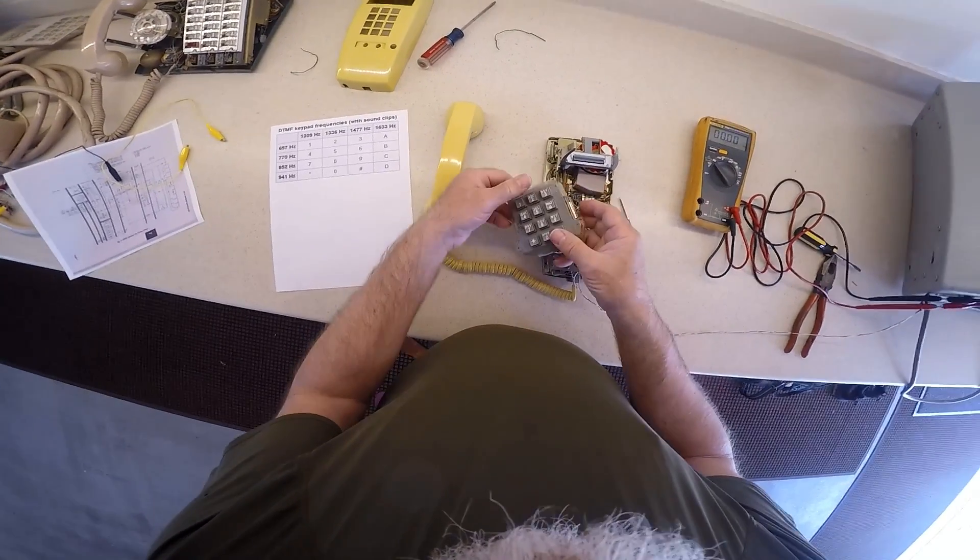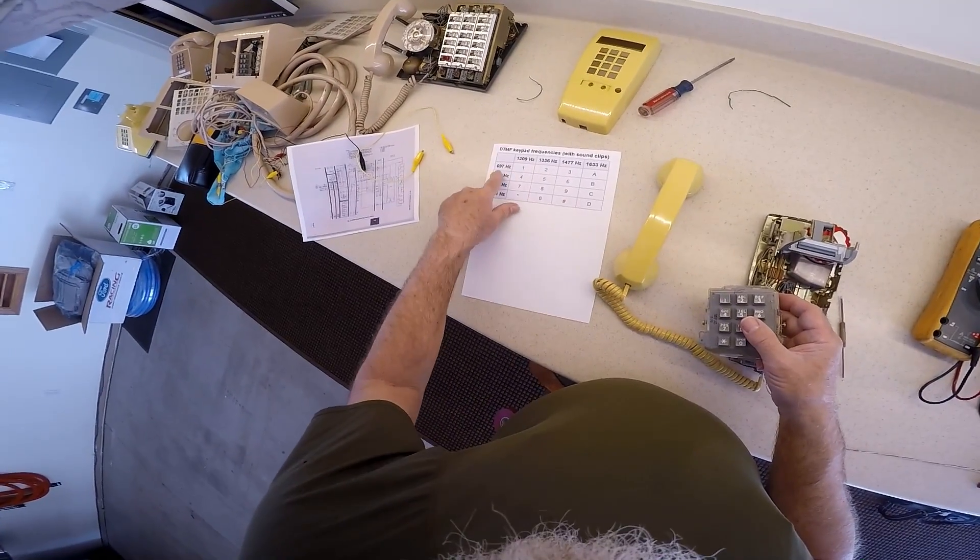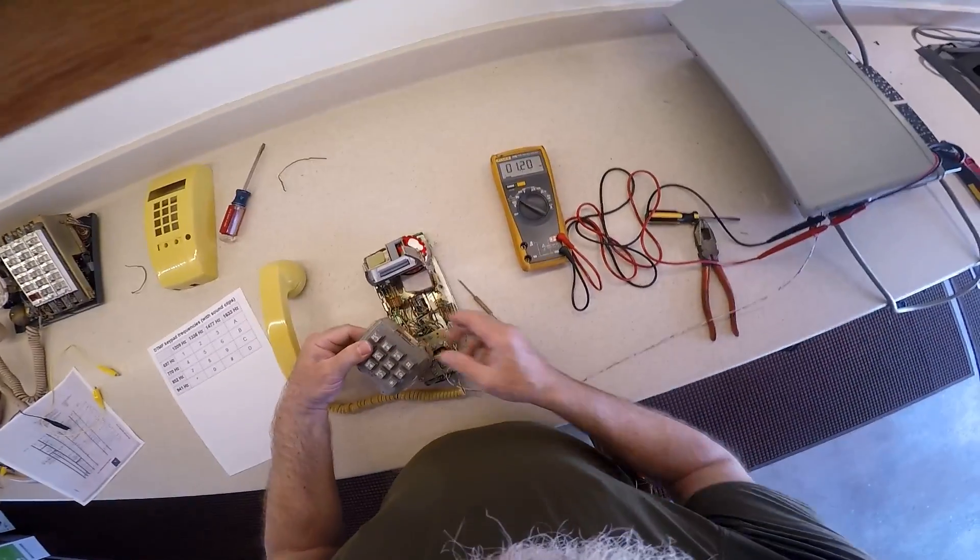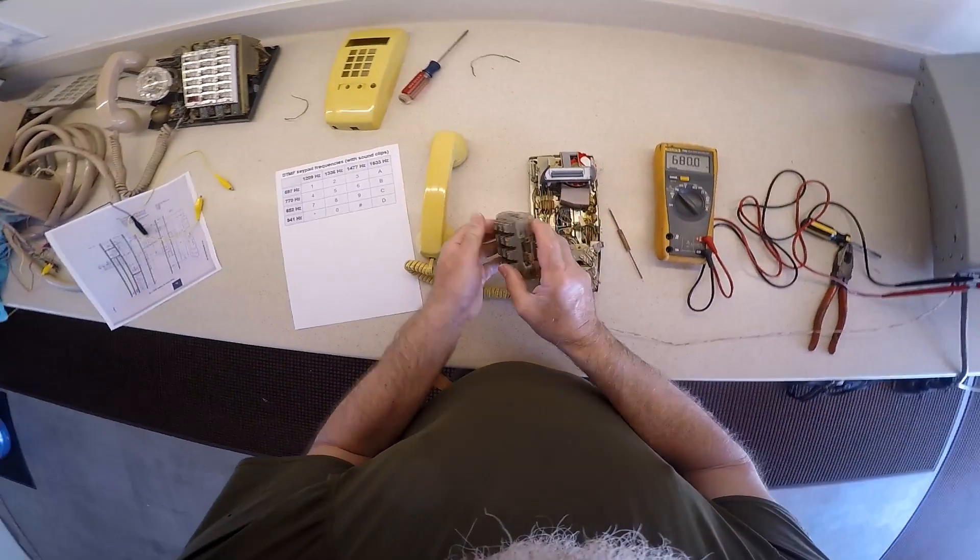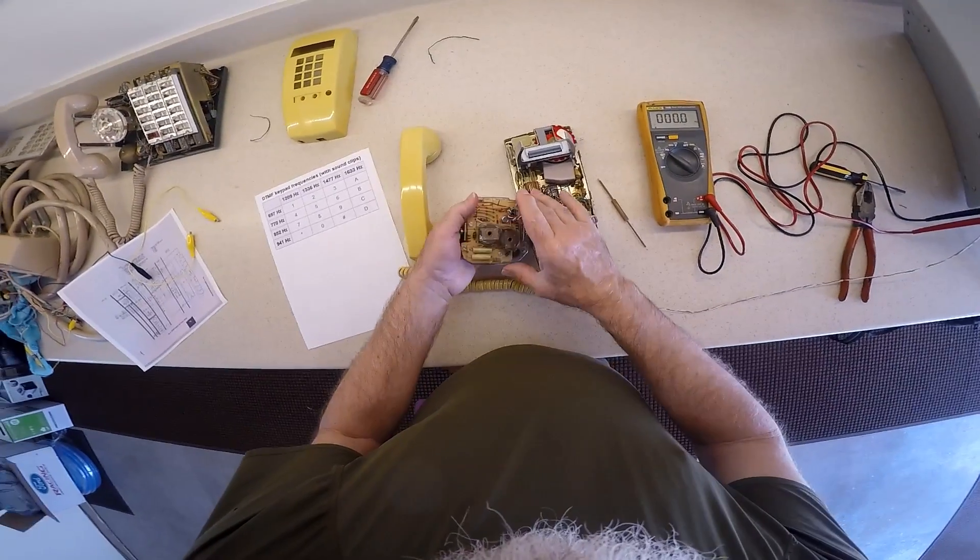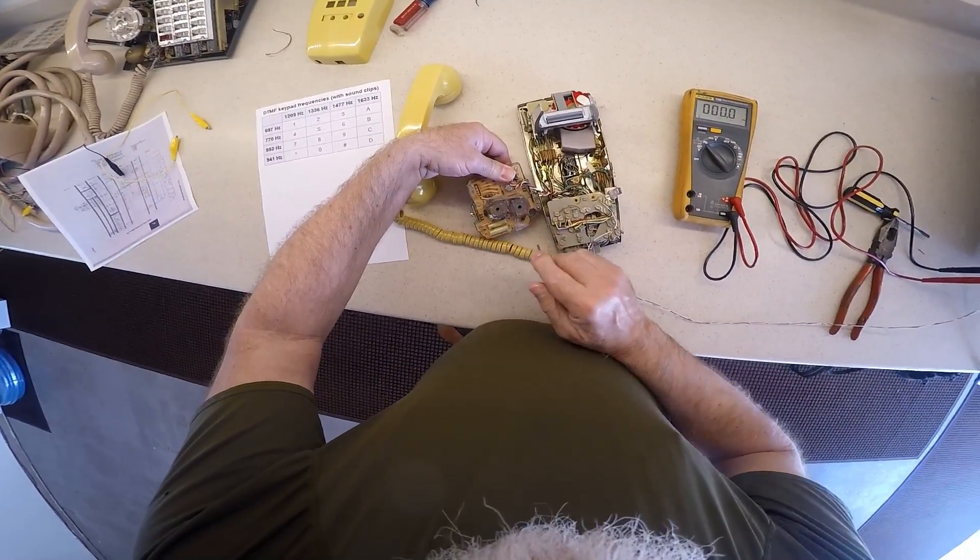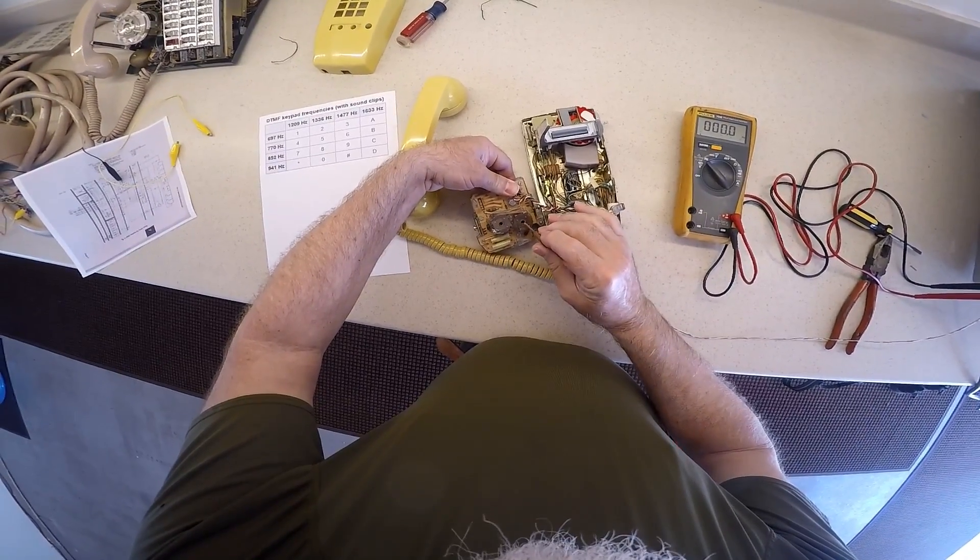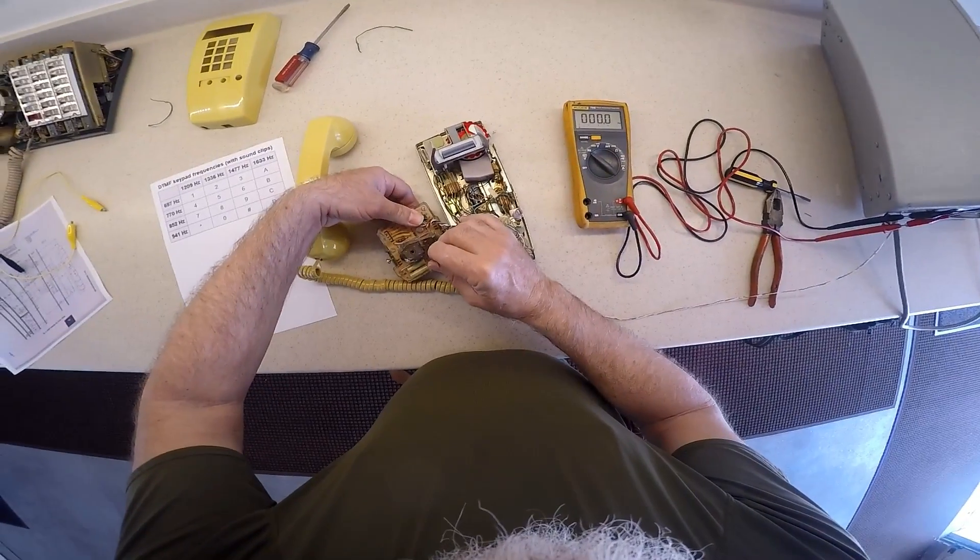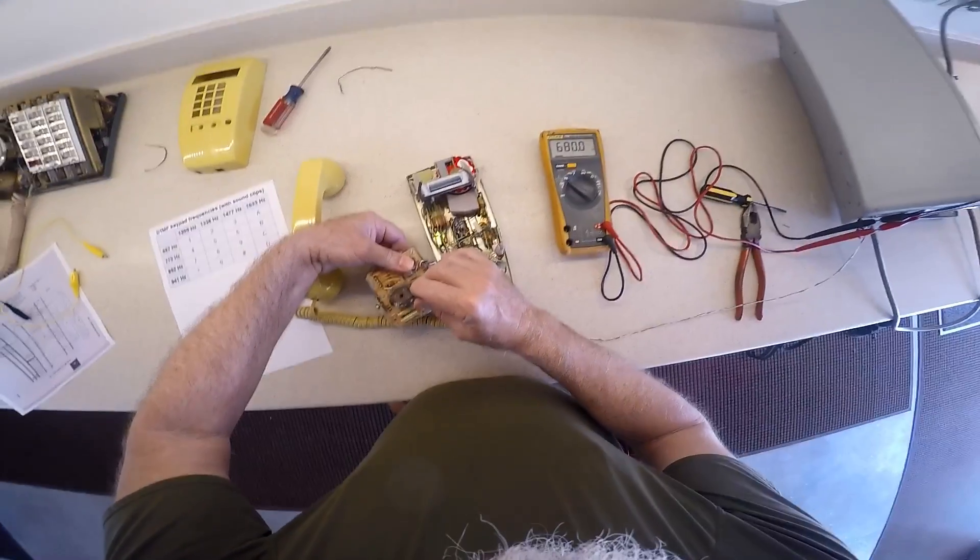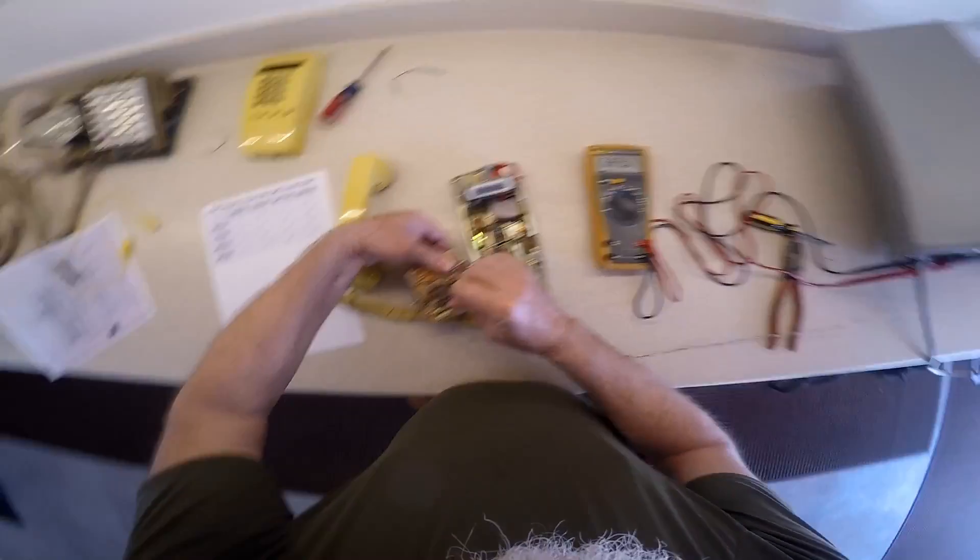So what we will do is, I will press the one and the two, and that should give us 697 cycles. Let's see what we get. We get 680, so we're off, and that's why the dial, that's why the telephone system is not responding. Now, I can't remember which one of these is high frequency and which one is low, so I'm going to have to take a guess, and I'll start with the one on the right. Okay, 680, and we need to bring it up to 697. Okay, I got the right one.